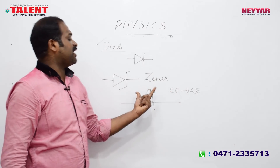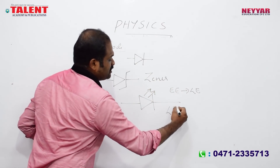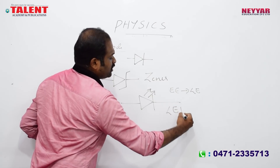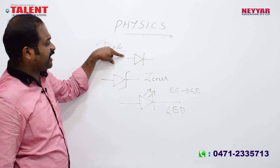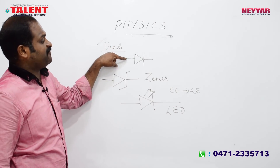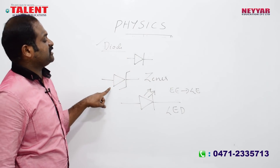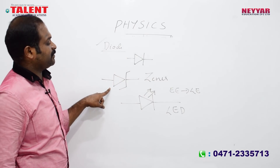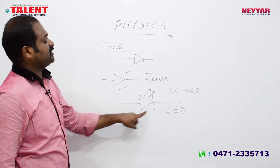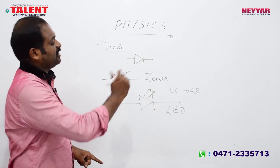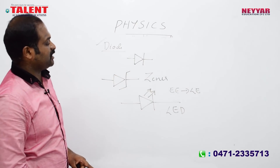The Light Emitting Diode (LED) converts electrical energy to light energy. The ordinary diode is used for rectification; the Zener diode is for voltage regulation; and the LED converts electrical energy to light energy. Next is the photodiode.